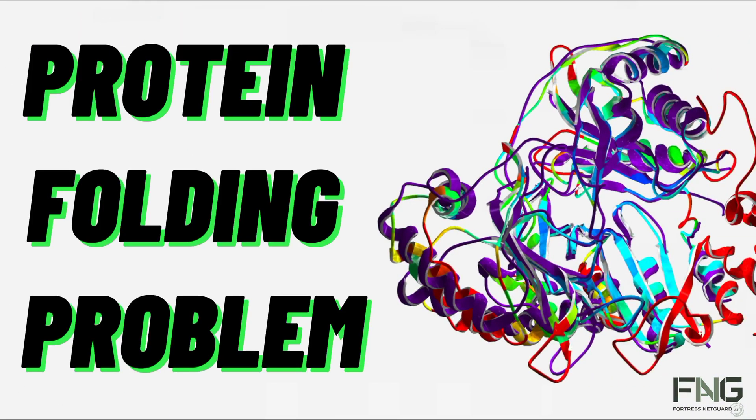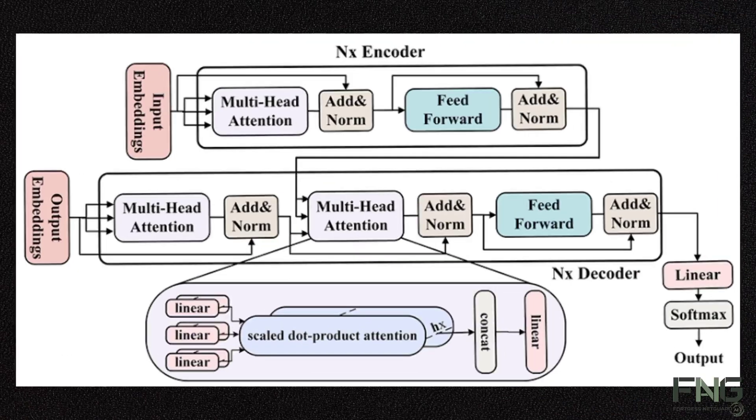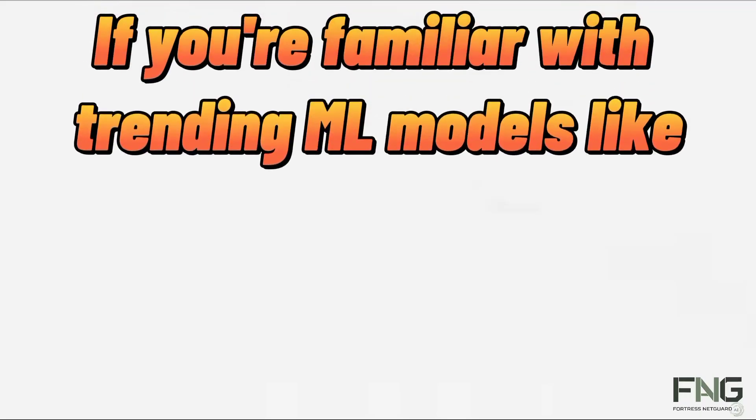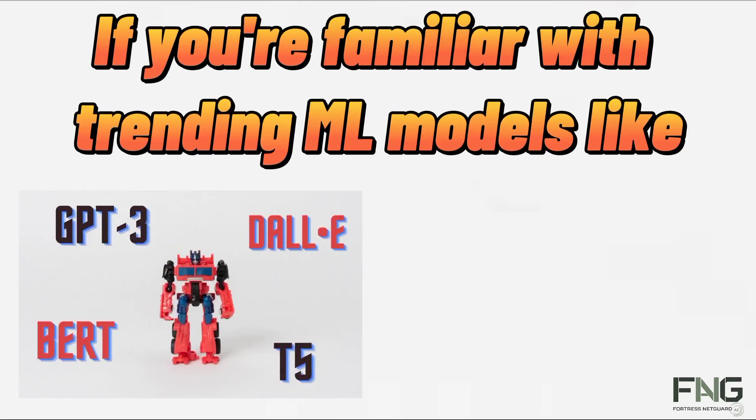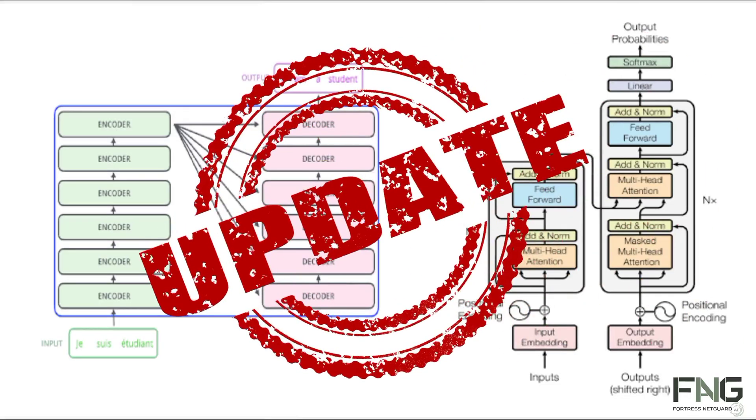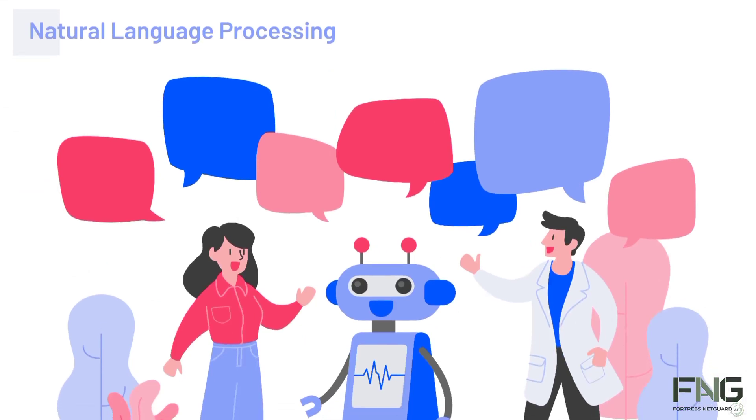They're poised to solve complex problems in fields like biology, particularly the protein folding problem. Essentially transformers are like a magical hammer in machine learning, seemingly able to tackle any challenge. If you're familiar with trending ML models like BERT, GPT-3, or T5, you'll know they're all based on transformers. Staying updated on transformer technology is crucial, especially for those in natural language processing.